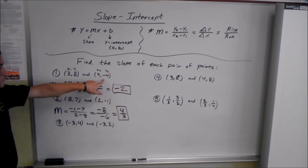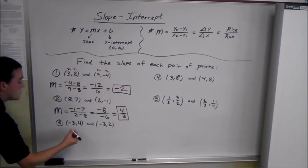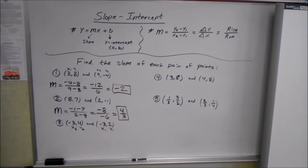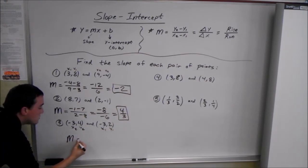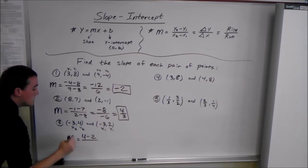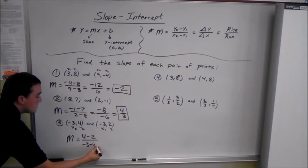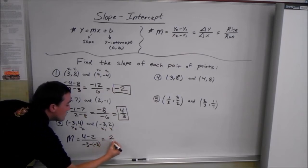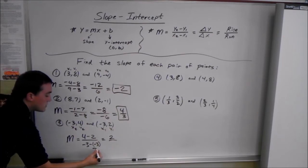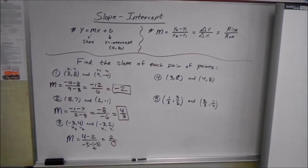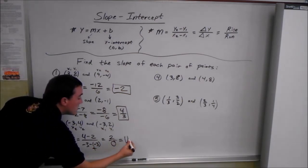You don't have to go from this point to this point in a fixed order. You can call either one x1, y1. So say we made this one x2, y2 and this one x1, y1. We do the same thing in a different order: m equals y2 minus y1, which is 4 minus 2, over negative 3 minus negative 3. Negative 3 minus negative 3 means negative 3 plus 3, which is 0. We are not allowed to divide by 0, so this slope is undefined.